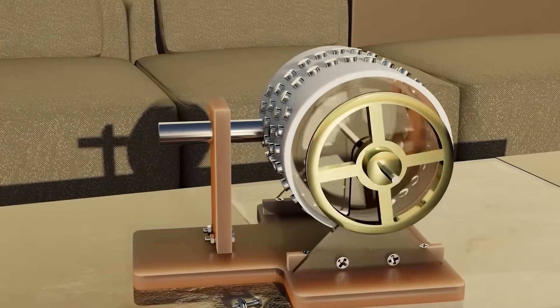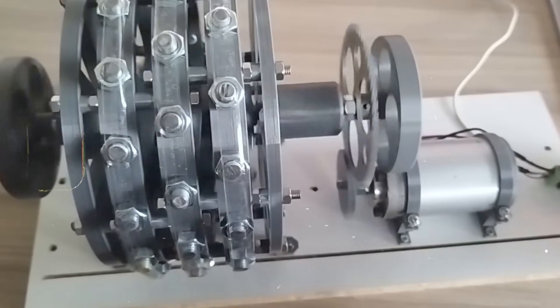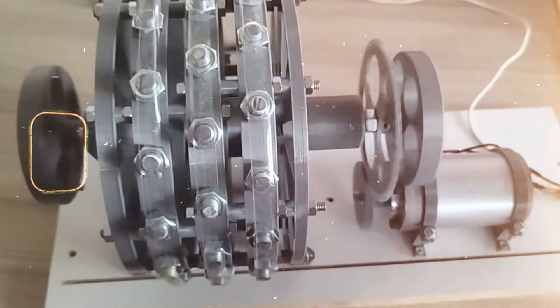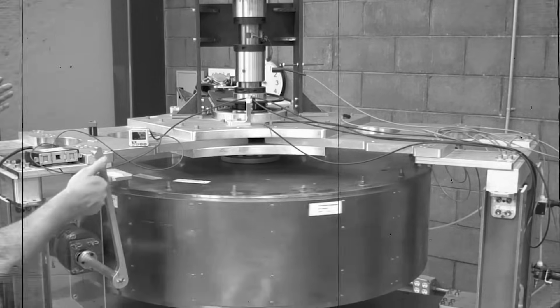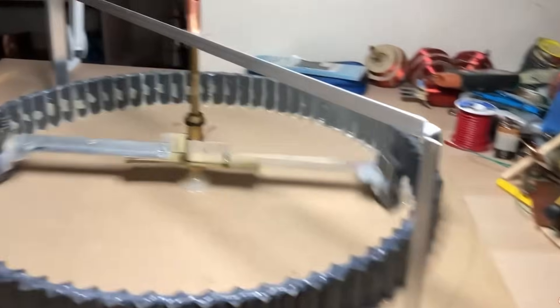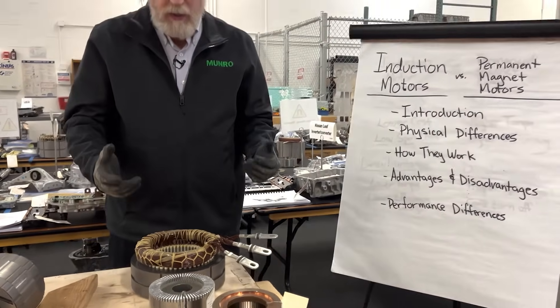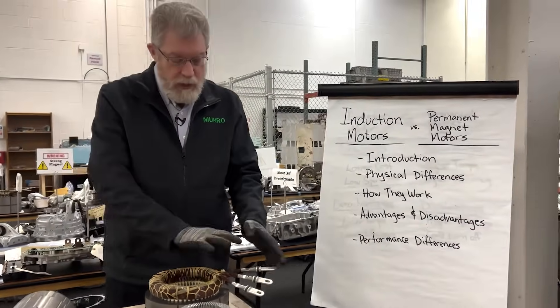Still, the illusion of continuous motion is incredibly convincing. People filming these systems choose angles that hide important forces. They show only the smooth spinning, not the hidden losses. And in a world filled with quick answers and shortcuts, many viewers accept what they see without asking deeper questions.